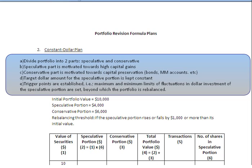The other thing to remember about the Constant Dollar Plan is that the target dollar amount for the speculative portion is to be held constant. In addition, we also have to specify the trigger points — that is, the maximum and minimum limits of fluctuations in the dollar investment in the speculative portion. If the fluctuation goes beyond these threshold limits, we will step in and rebalance the portfolio.